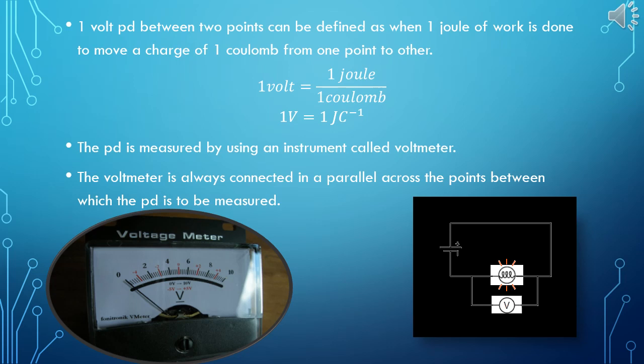So the potential difference is measured by using instrument called voltmeter. The voltmeter is always connected in parallel across the points between which the potential difference is to be measured. The below figure shows voltage meter whose range is 0 to 10, and beside a circuit diagram is shown where bulb is glowed and along with that, end of the bulb, voltmeter is connected. That is parallel connection.